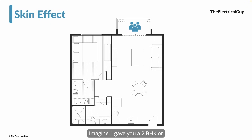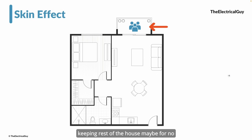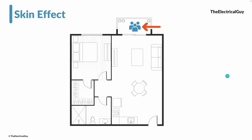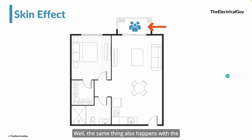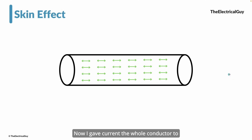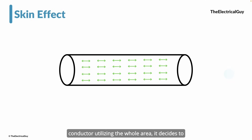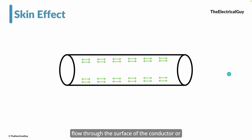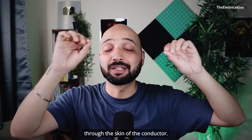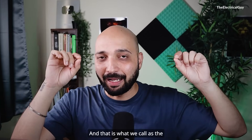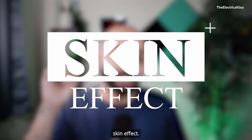Imagine I gave you a 2 BHK or a big house to live in, but you most of the time stay in the balcony, keeping the rest of the house for no use. It looks weird, right? Well, the same thing also happens with current. I gave current the whole conductor to flow, but instead of flowing through the whole conductor and utilizing the whole area, it decides to flow through the surface of the conductor — or through the skin of the conductor. And that is what we call the skin effect.